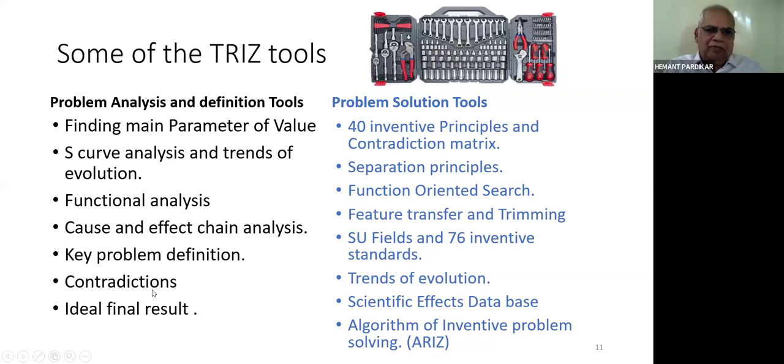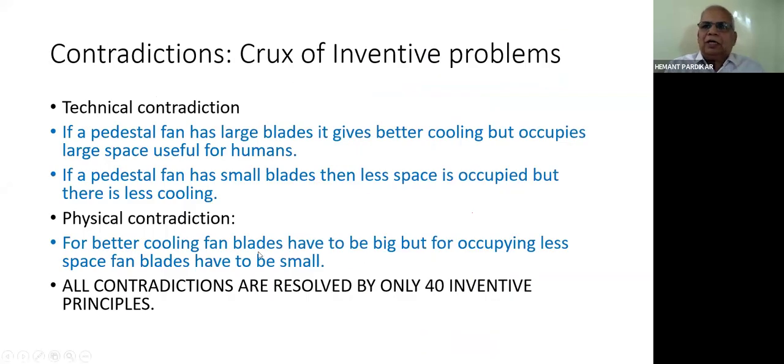Contradiction and ideal final result. Contradiction is the crux of all inventive problems. In my childhood there were few ceiling fans and there used to be table fans or large pedestal fans. If pedestal fan has large blades it gives better cooling effect, but occupies large space useful for humans and was also dangerous because it could suck women's clothes into the fan blades. If it has small blades, less space is occupied but there is less cooling. Technical contradiction always comes in these pairs.